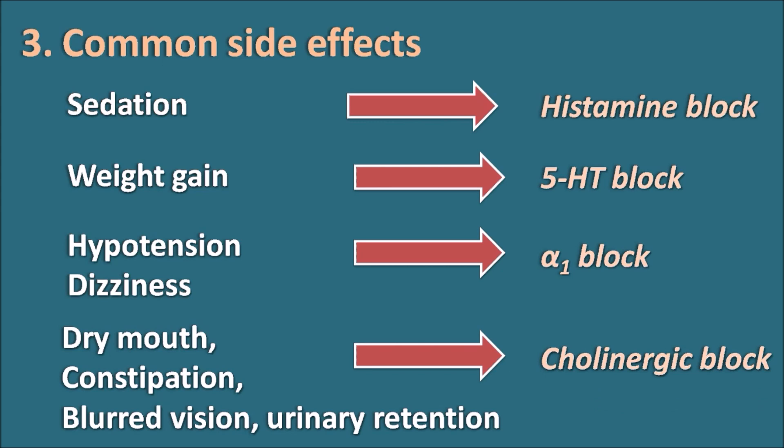Phenothiazines can block different types of receptors — histamine, 5-HT, alpha-1, as well as cholinergic receptors — all resulting in a variety of side effects.